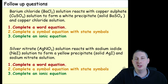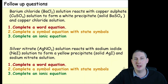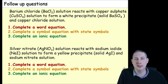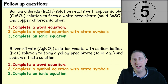Here is some work for you. First: barium chloride solution reacts with copper sulfate solution — write the word equation, write the symbol equation with state symbols, and complete an ionic equation. Second: silver nitrate solution reacts with sodium iodide solution to form a yellow precipitate, AgI, and sodium nitrate solution — complete a word equation, symbol equation with state symbols, and ionic equation. Pause the video and attempt these now.